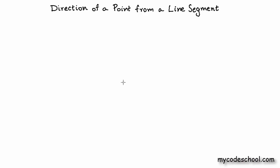Hi there and welcome to another geometry video in the series Maths for Programmers. Previously in this series we saw how to calculate the area of a polygon using the concept of vector cross product. In this video, we will once again use the concept of vector cross product to solve another fundamental problem in geometry: how to find the direction of a point from a line segment.